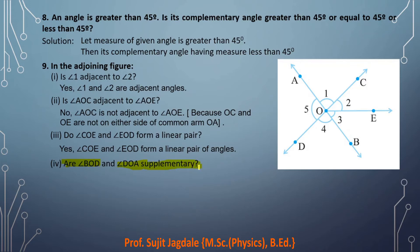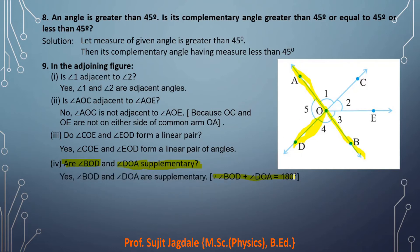Are angle BOD and angle DOA supplementary? Two angles forming a linear pair are always supplementary — their addition is 180 degrees. Angle BOD corresponds to angle number four in the diagram, and angle DOA is angle number five. They are adjacent angles whose non-common arms are directed oppositely, so yes, they are supplementary because they form a linear pair.